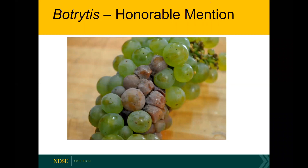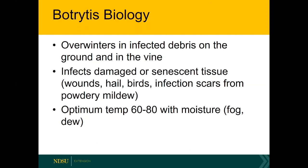Botrytis is a terrible problem in greenhouses and anywhere that remains wet, and grape clusters are another place where botrytis really thrives. You can see a photo here with that fuzzy, gritty collection of spores that are really characteristic of botrytis. Botrytis can overwinter and infect debris on the ground or in the vine. Unlike the other pathogens we've talked about, botrytis is what we call a saprophyte — it likes to infect and feed off of dead tissue. It's more of an opportunistic pathogen — it won't directly infect a healthy host, but if the host becomes damaged or tissues are senescing, such as from bird activity, hail, or even a powdery mildew infection, botrytis can take advantage of that.